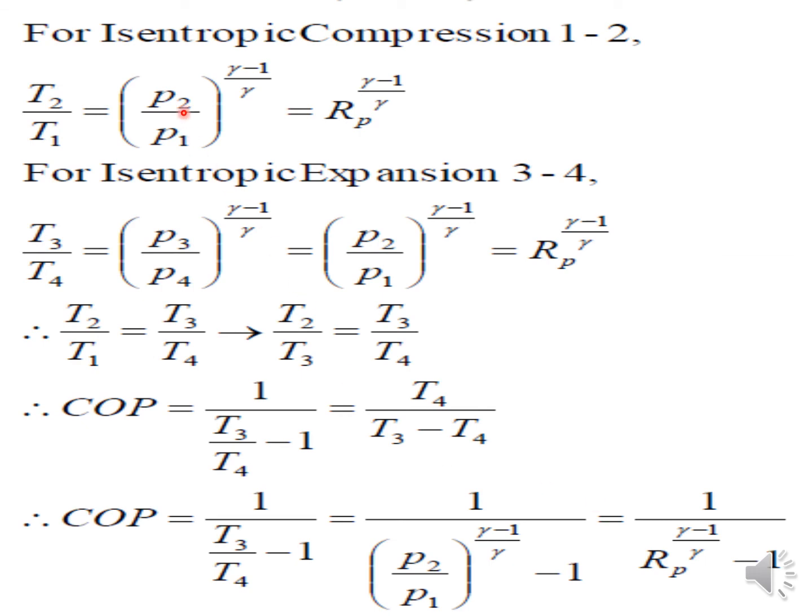We know that isentropic compression: T2 by T1 equals P2 by P1 raise to gamma minus 1 by gamma. P2 by P1 is RP, pressure ratio. Similarly for process 3 to 4, RP raise to gamma minus 1 by gamma. When these two are equal, T2 by T1 and T3 by T4 are also equal. Mathematical modification: T2 by T3 equals T1 by T4.